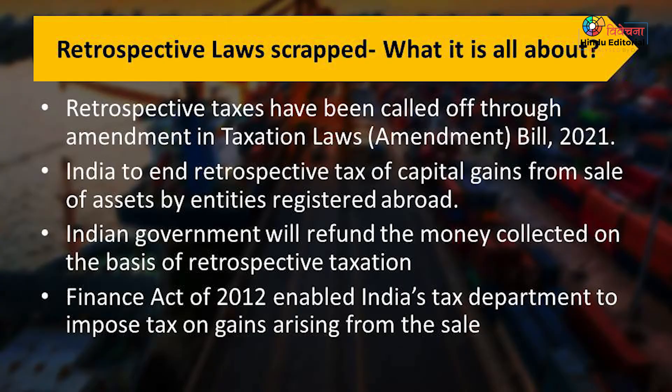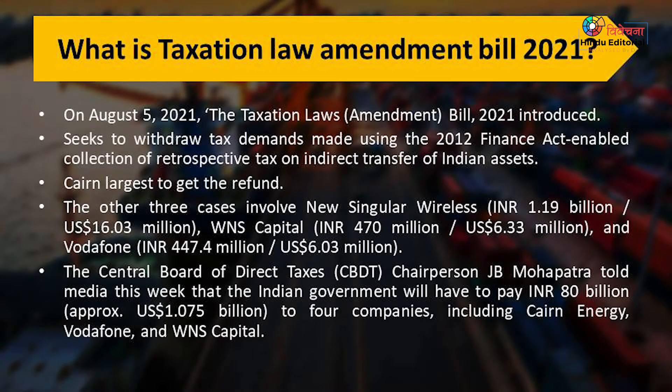We will continue with the second topic which is about retrospective taxes — how retrospective taxes have been removed by the government by bringing an amendment law known as the Taxation Amendment Bill. This has been introduced by the current government, whereas the retrospective tax was introduced by the UPA government in 2012.